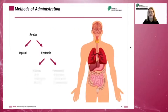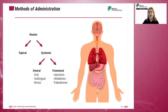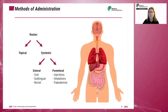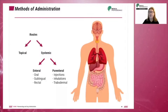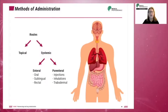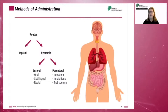In pharmacology and toxicology, a route of administration is defined as the path by which a drug, a fluid, a poison, or other substances are taken into the body. Routes of administration are generally classified by the location at which the substance is applied. There are three classes: enteral, including oral;